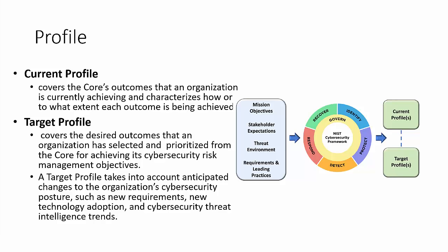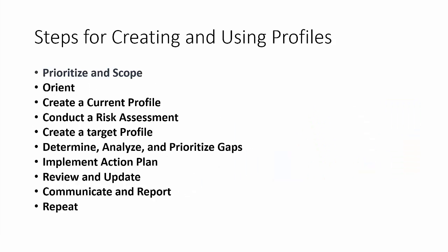Based on the gap assessment, you prepare a plan and add elements to achieve your goal. The steps to implement and create a profile are: first, prioritize and scope; second, orient; third, create a current profile; fourth, conduct a risk assessment; fifth, create a target profile; sixth, determine, analyze, and prioritize gaps; seventh, implement an action plan; and eighth, review and update.